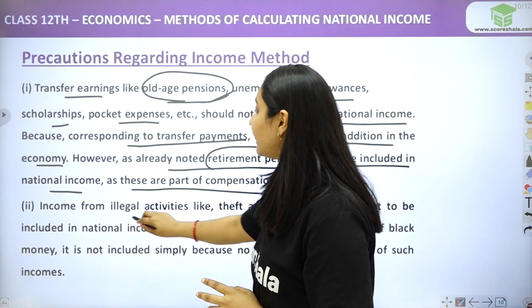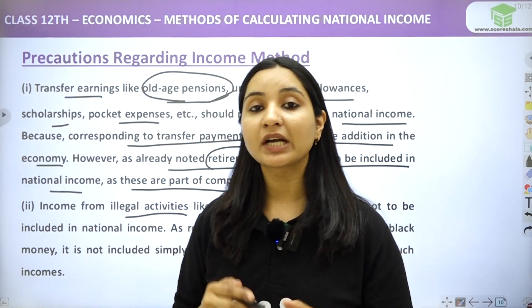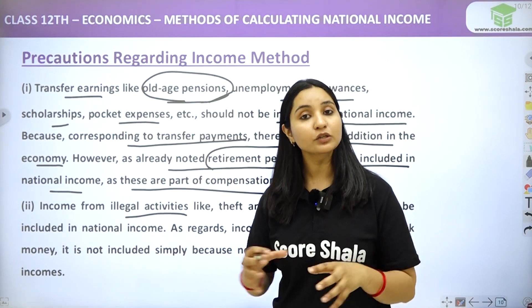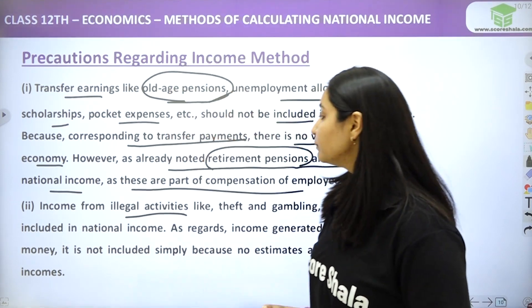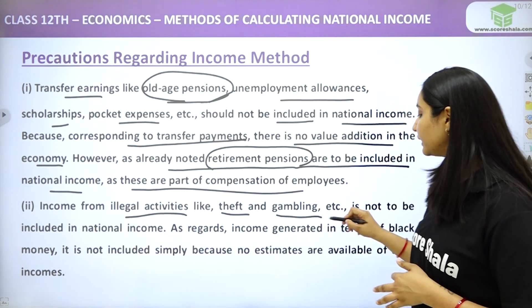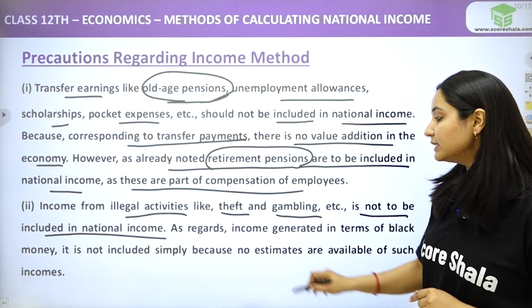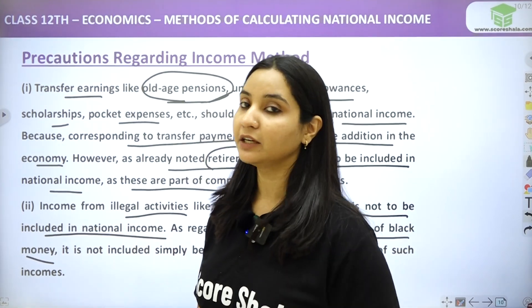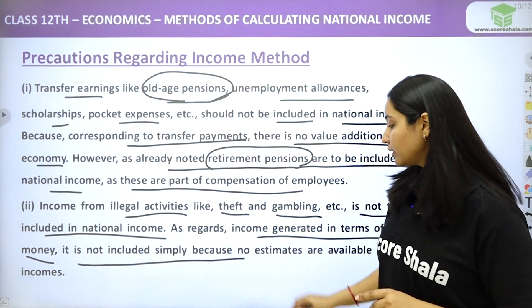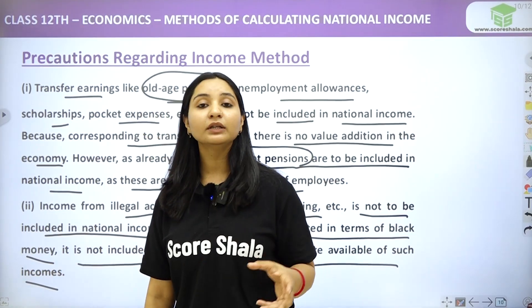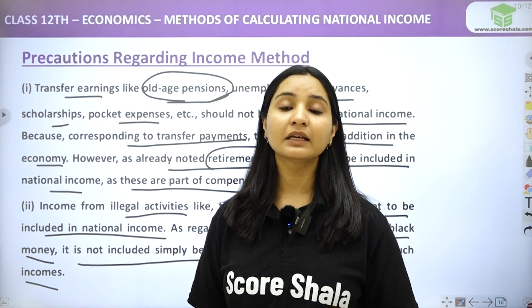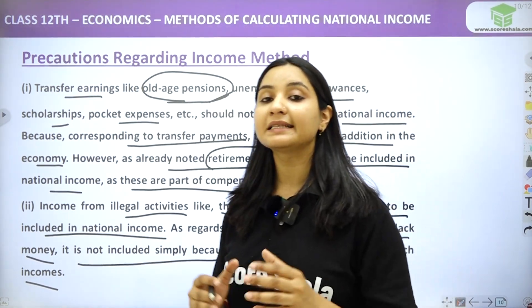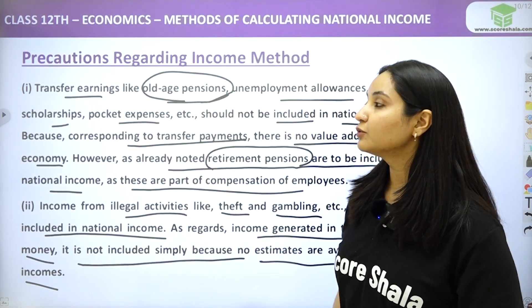The next point is income from illegal activities. If someone is a thief or involved in smuggling, their income will never be included in national income. Illegal activities like theft and gambling are not to be included. Income generated as black money is also not included, simply because no estimates are available of such income — we don't know its source or what production it comes from.